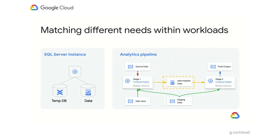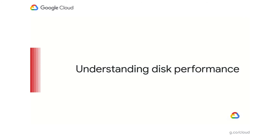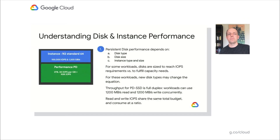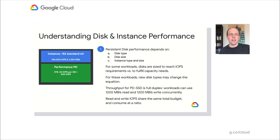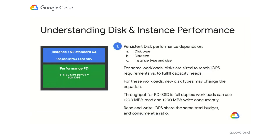Using different disk types with an instance has interesting performance implications. Let's have a look at understanding disk performance in more detail. Persistent disk performance depends on disk type, disk size, instance type, and size. In this example, I have an N2 standard instance with 64 vCPUs that can support a maximum of 100,000 IOPS. My Performance PD volume is sized to 3 terabytes, and at 30 IOPS per gigabyte, that results in 90,000 IOPS.